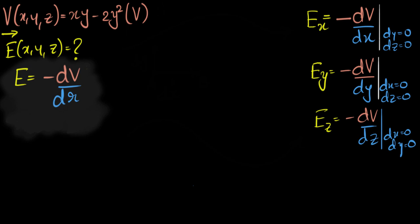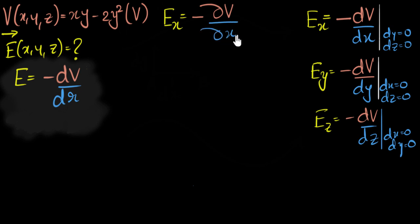Let me start by finding EX, the X component of the electric field. Let me show you the shorthand notation we use: instead of writing d, we write ∂V over ∂x. It's just a notation — mathematically, all this is saying is that you're only differentiating the function V with respect to X, and if there are any other variables like Y and Z, they're not changing. That's what it means to say dy is zero and dz is zero — Y and Z are not changing. That's how you should differentiate it.